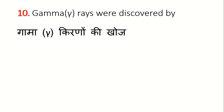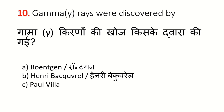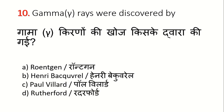Gamma rays were discovered by whom? Options are: A. Prontagon, B. Henry Becquerel, C. Paul Villard, D. Rutherford. The correct answer is Option C: Paul Villard. In 1900, Paul Villard discovered gamma rays while studying radiation emitted from radium.